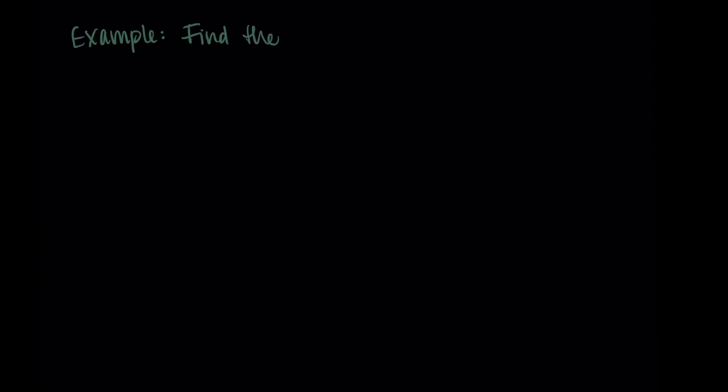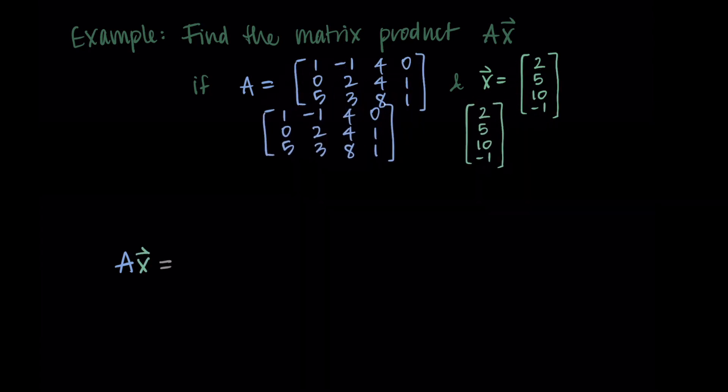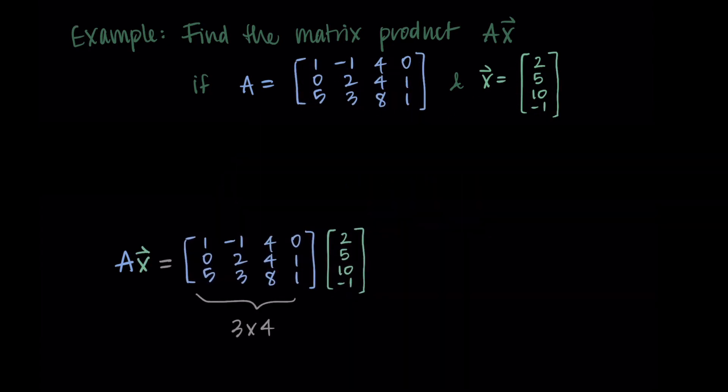So let's find the matrix product Ax if A is a 3 by 4 matrix: 1, negative 1, 4, 0, 0, 2, 4, 1, 5, 3, 8, 1. And then we have our vector x which is 4 by 1: 2, 5, 10, negative 1. So to do the matrix product we write these things next to each other. So I have my 3 by 4 matrix times my 4 by 1 matrix. And I have the same number of elements in x as I do columns in A. And that is so we end up with a resulting vector that has 3 components. So it's 3 by 1.